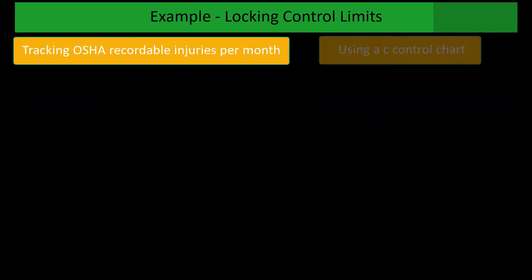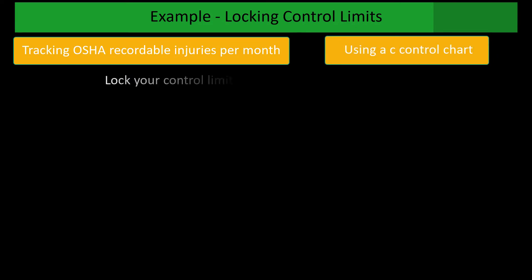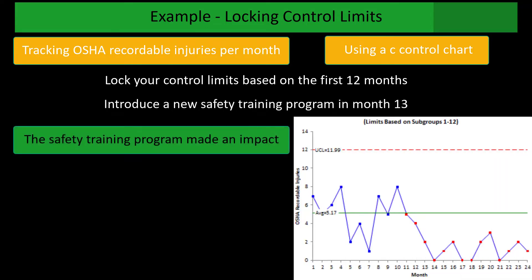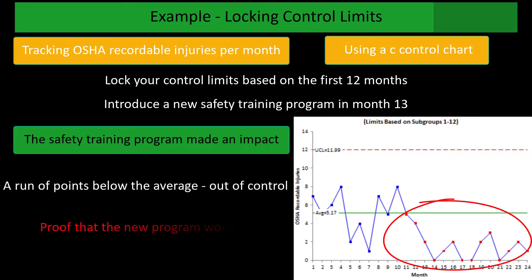So here's an example of locking control limits and changing control limits. Suppose you're tracking OSHA recordable injuries per month using a C chart. You're going to lock your control limits based on the first 12 months. Now suppose you introduce a new safety program in month 13. And it had an impact as you can see. You've got a run of points below the average. Proof that the new program worked.